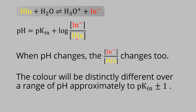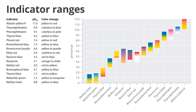From this equation we can see that if pH changes, the ratio of these two species will change as well, and they have different colors. If one is in a higher amount than the other, it will show the distinct color of that species. But if you have similar amounts of both, you will not see a distinct difference in color. It has been found that the color will be distinctly different over a range of pH approximately equal to pK-indicator plus or minus 1. This is the property of acid-base indicators.